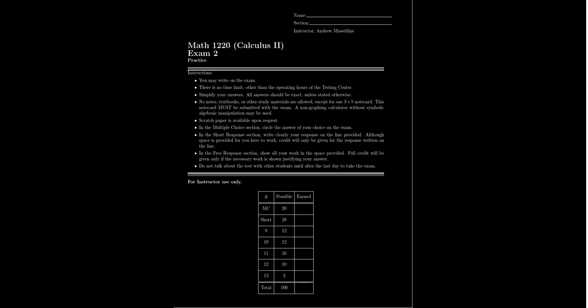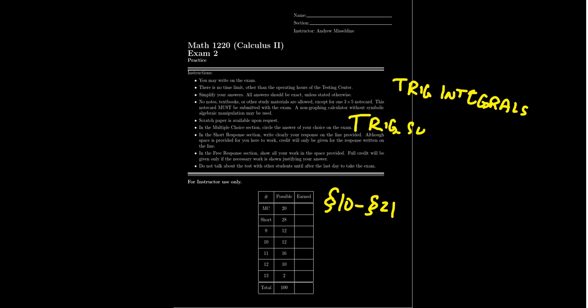Exam 2 is going to cover materials from lecture 10 all the way up to lecture 21. A quick summary of what's going to be on this exam: there'll be techniques of integration. This will include many new techniques we've learned, like trig integrations — how we can use trig identities to help us compute antiderivatives of trigonometric functions — but also trig substitution, where the method of substitution is modified to turn algebraic functions into trigonometric functions.